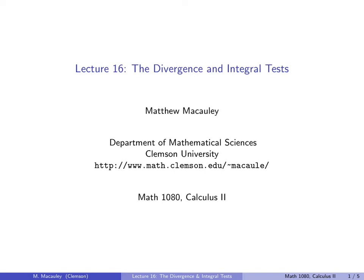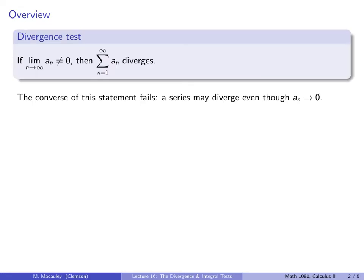Welcome to lecture 16 on the divergence and integral tests. Recall the divergence test: if the sequence of terms in a series does not go to zero, then the series must diverge — in other words, if the a_n's do not go to zero, then the series diverges.